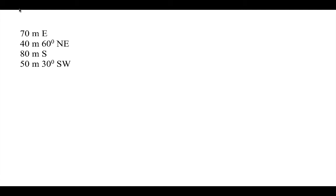If I were to try to look at this one, I'm going to start off going 70 meters east. But from there, I'm going to go 40 meters 60 degrees northeast. From there, I might head 80 meters south, and then 50 meters 30 degrees southwest. And what I want is this resultant vector here.